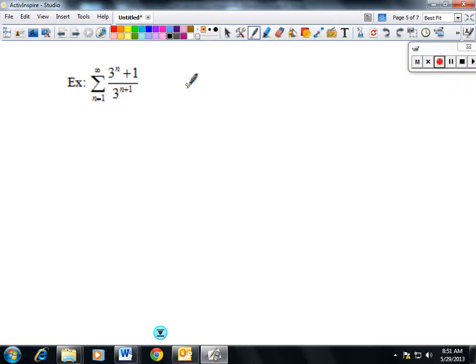This one, if I rewrite it, that's the same thing as 3^(n+1)/(3^n · 3^1). I can pull out the 3^1 and just make that 1/3 times the series of 3^(n+1) over, whoops, hold on.